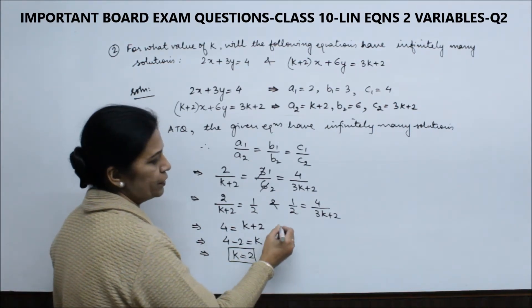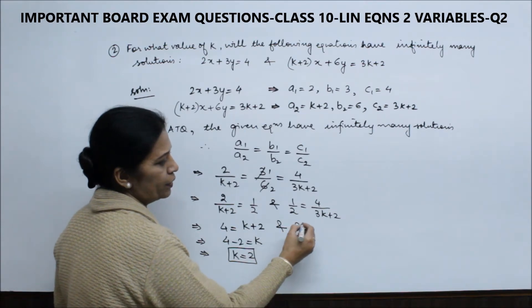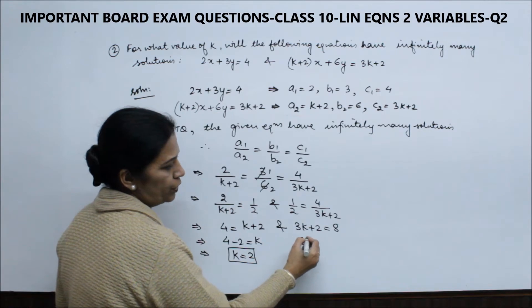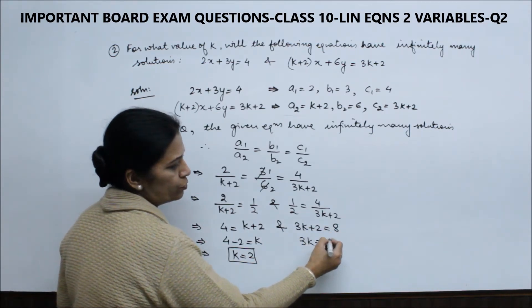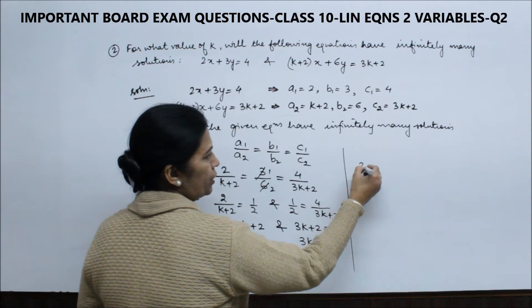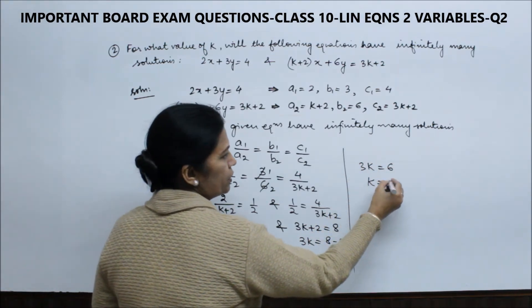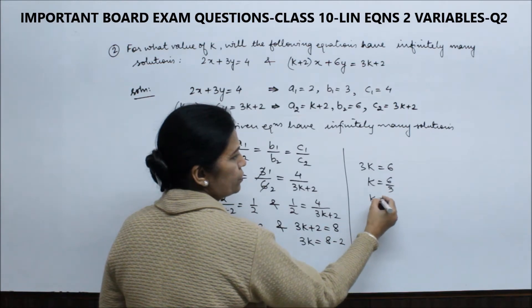We got 2 from the first pair. Similarly with the second pair, cross multiplying 1/2 = 4/(3k+2): 3k + 2 = 8. So 3k = 8 - 2, which gives 3k = 6. Therefore k = 6/3, so k = 2.